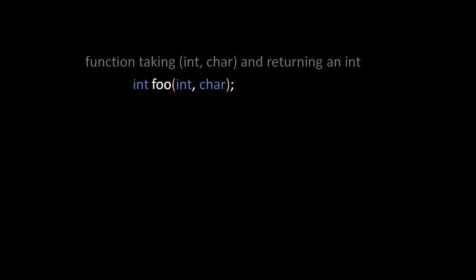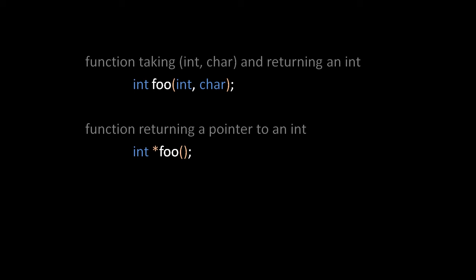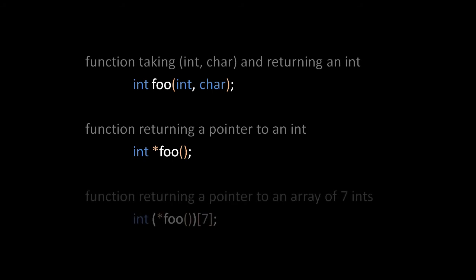Here, we have a declaration of a function called foo that takes two parameters and returns an int. The way to read the syntax is to read the modifiers on the name in order of precedence. The parameter list is the only modifier, so foo is a function taking an int and char and returning an int. In the second example, the empty parameter list has higher precedence than asterisk, so foo is a function taking no arguments and returning a pointer to int. In the third example, the empty parameter list again has higher precedence than asterisk, and thanks to the surrounding parens, the asterisk modifier is applied before the square brackets, so this is a function taking no arguments and returning a pointer to an array of 7 ints.